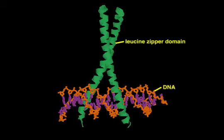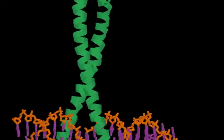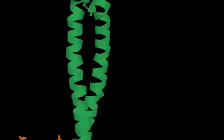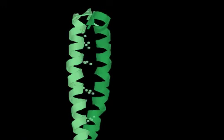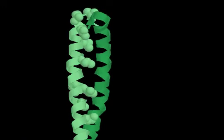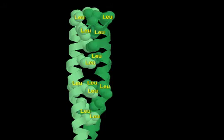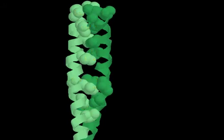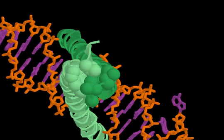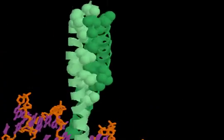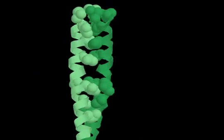A leucine zipper domain is comprised of two long, intertwined alpha helices. Hydrophobic side chains extend out from each helix into the space shared between them. Many of these hydrophobic side chains are leucines, giving this domain its name. A space-filling view reveals the tight packing of side chains between the leucine zipper helices, making the domain especially stable.